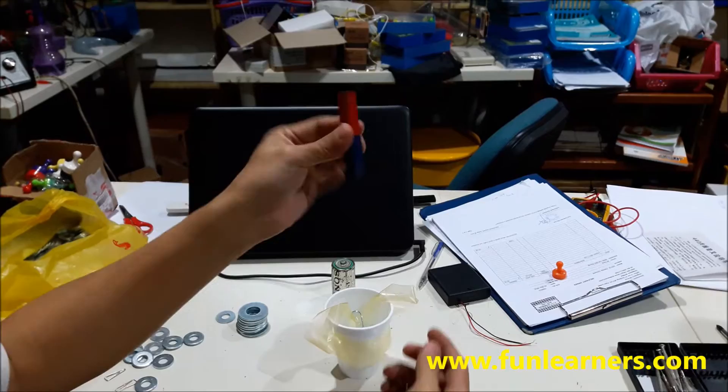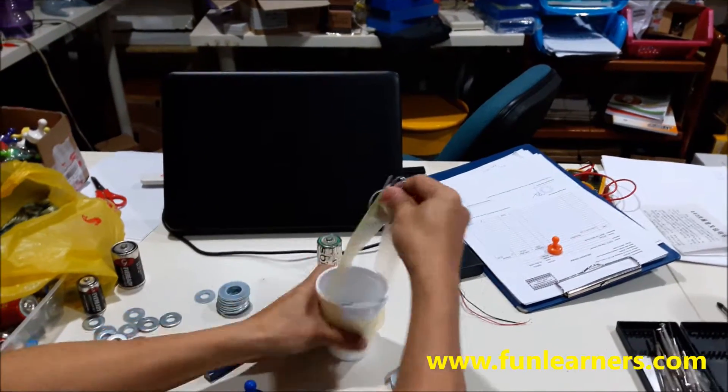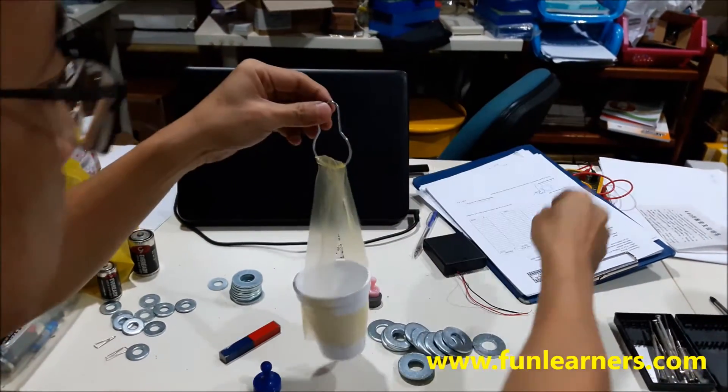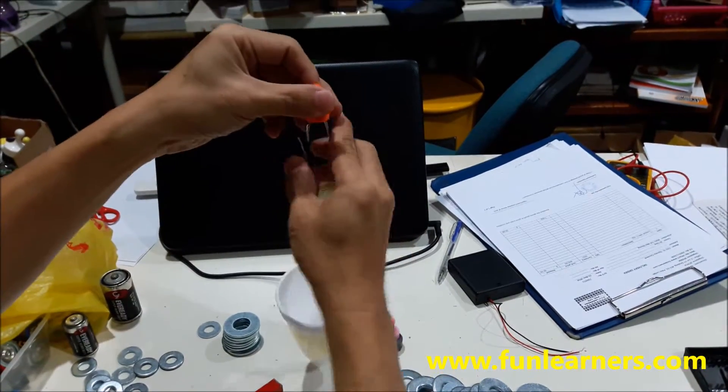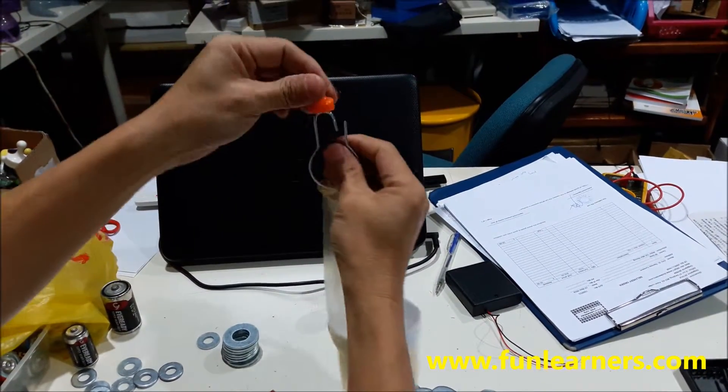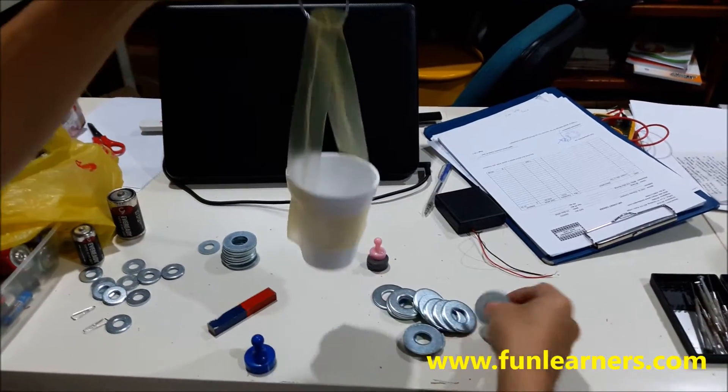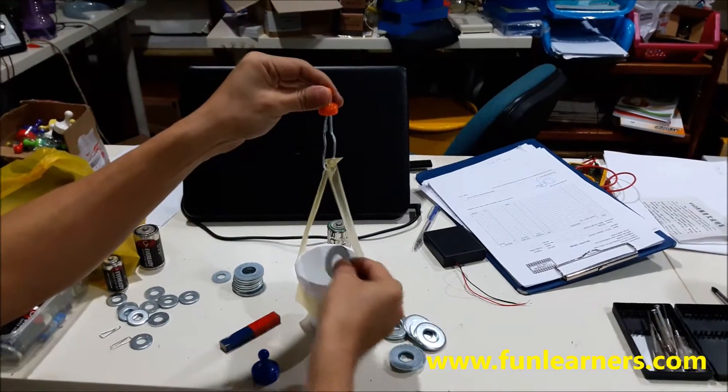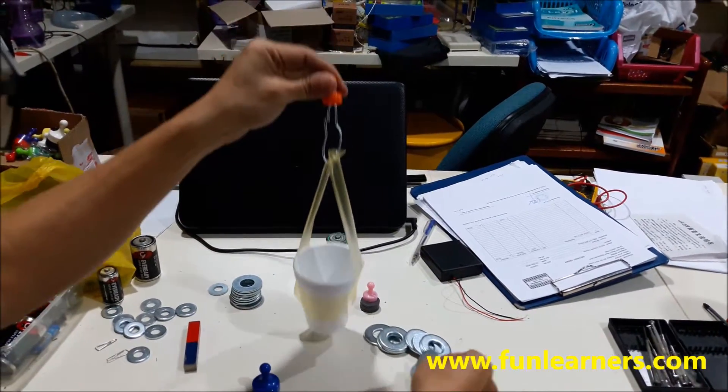This one can only lift ten washers. Now we pour it out again, then we use the smaller magnet which is this one. This is the neodymium magnet. It's only so small. One, two, three, four, five, six, seven, eight, nine, ten, eleven.